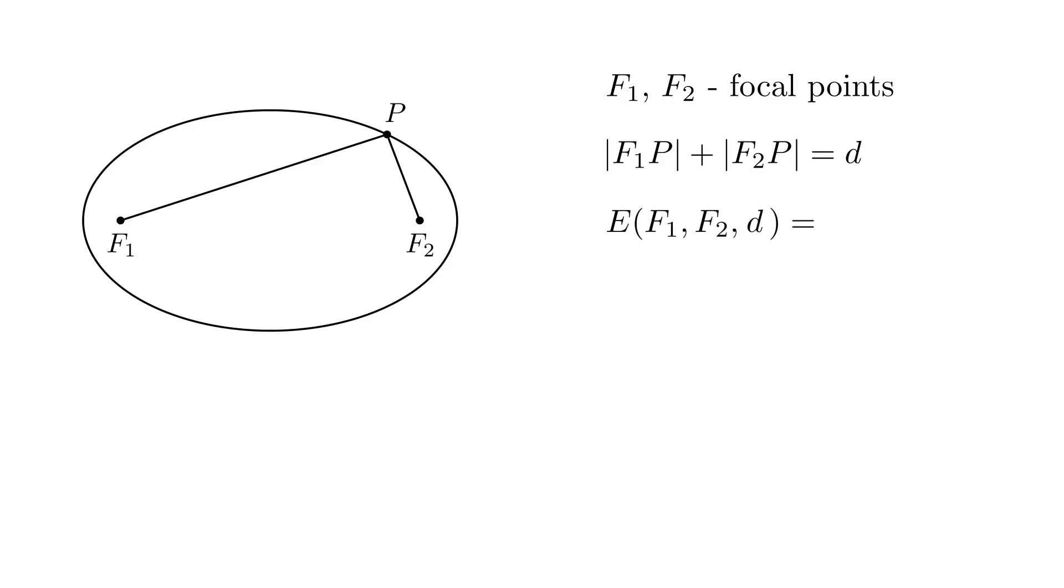So, an ellipse is uniquely defined with two focal points F1 and F2 and the length d. And it's the set of all points P such that F1P plus F2P equals d. And we'll later see where this length d appears on the ellipse itself.